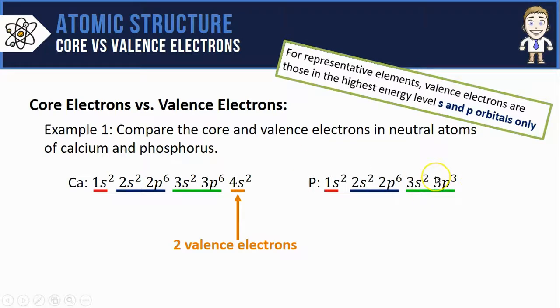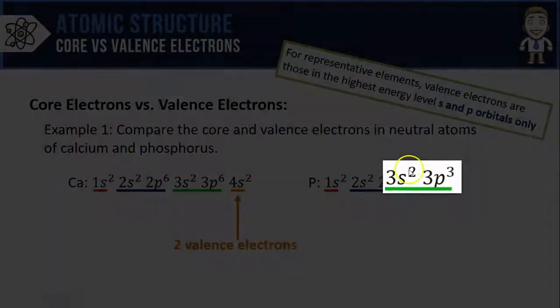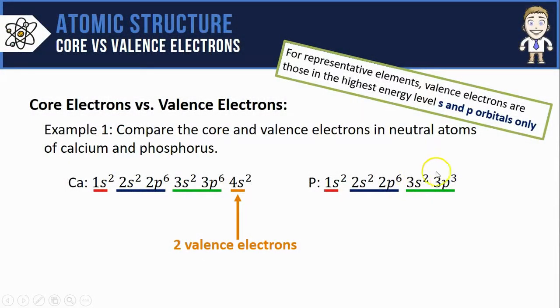Here for phosphorus, its highest energy level is the third. The S and P orbitals both count in that highest energy level, so phosphorus has five valence electrons.